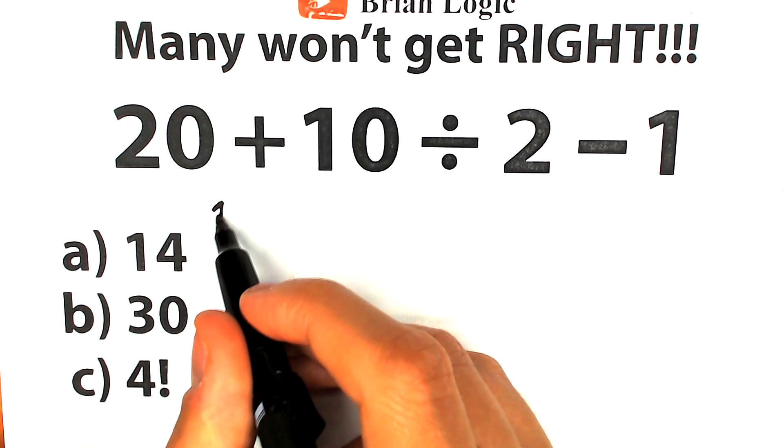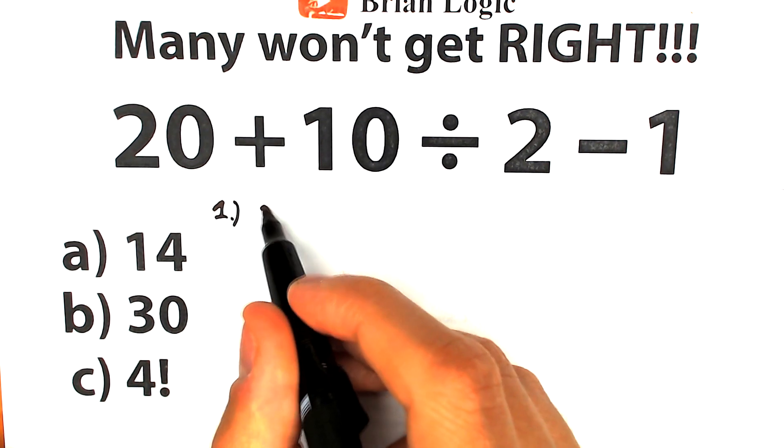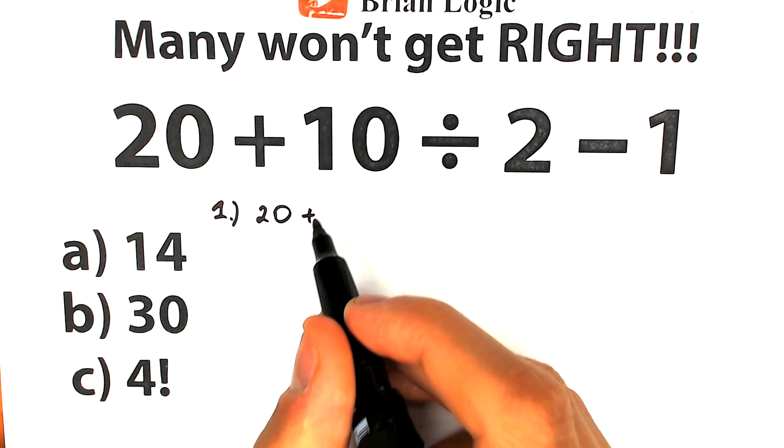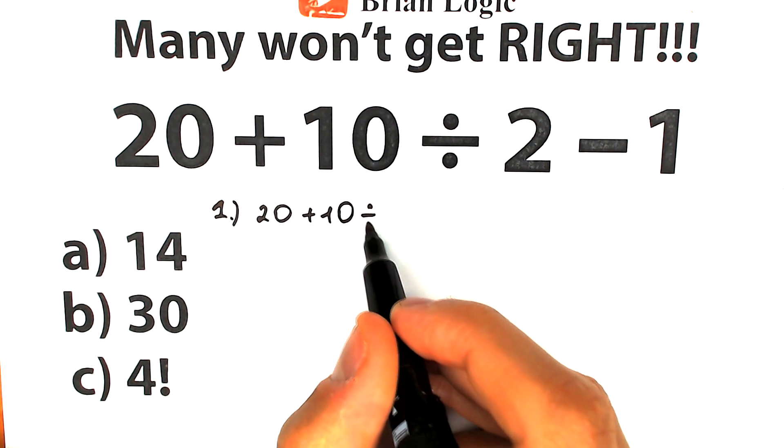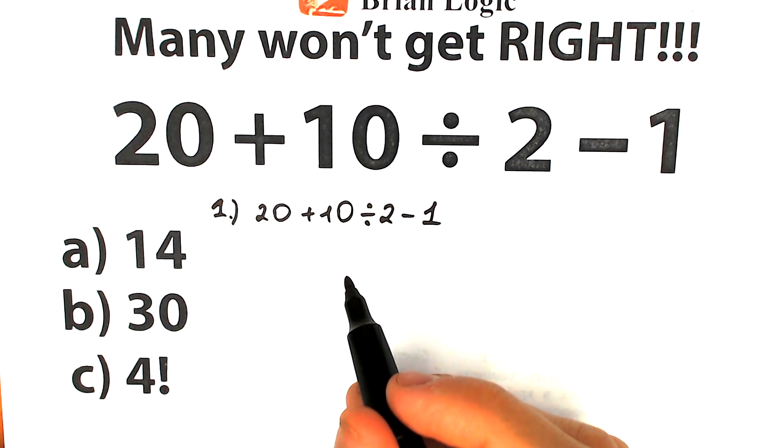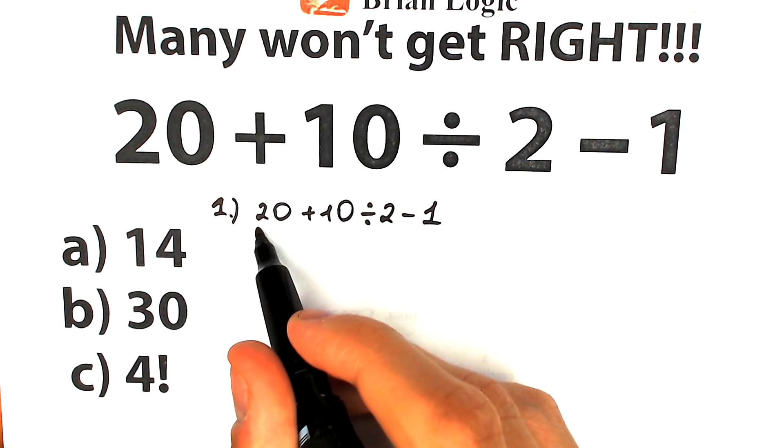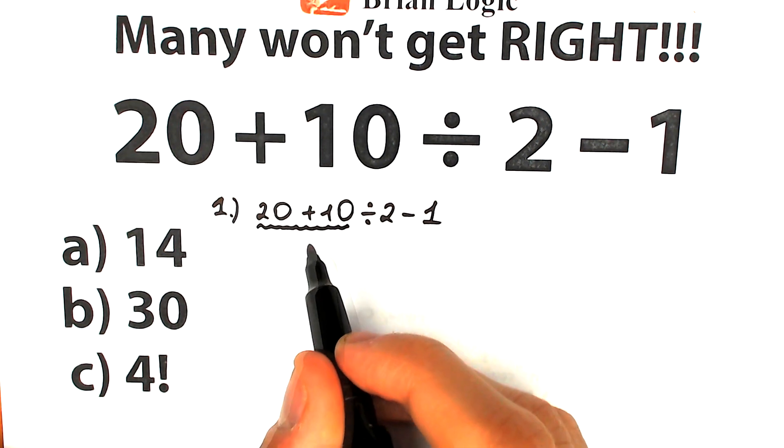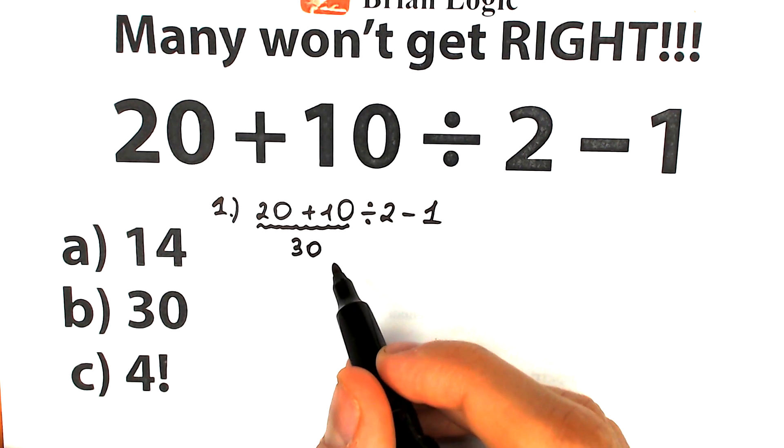First of all I want to start with this first interpretation. Take a look closely. We have 20 plus 10 divided by 2 and minus 1. A lot of students don't know about order of operations. They solve this challenge like that - they say okay we have 20 plus 10 on the left hand side which gives us 30 with this division by 2.